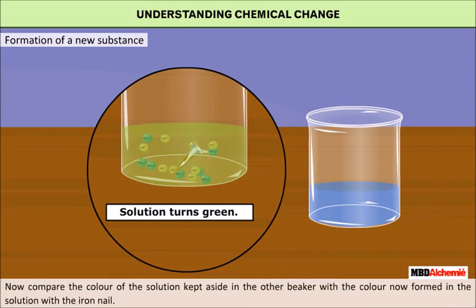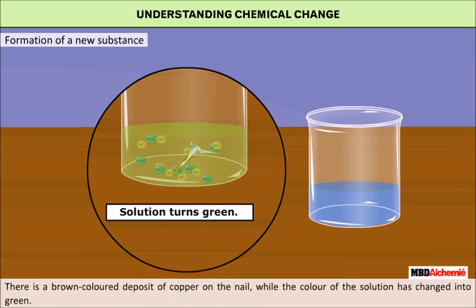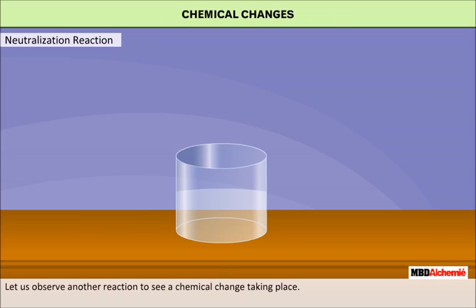Notice any change in the nail after it is taken out of the beaker. A brown color of copper deposit forms on the nail, while the color of the solution changes into green. This is an example of a chemical change.